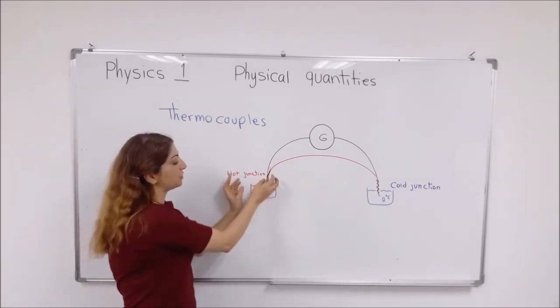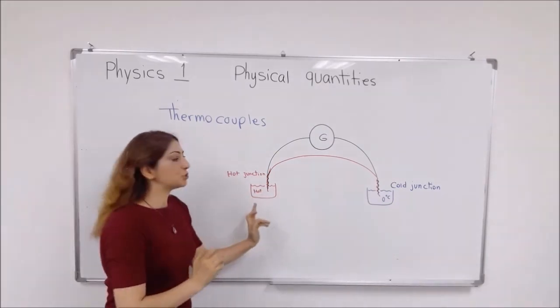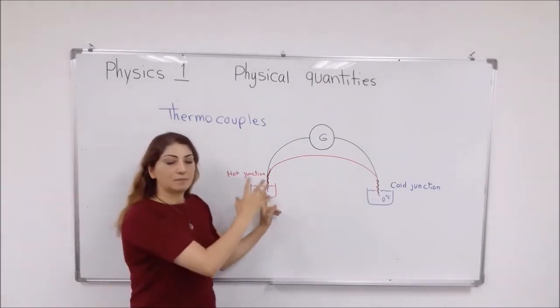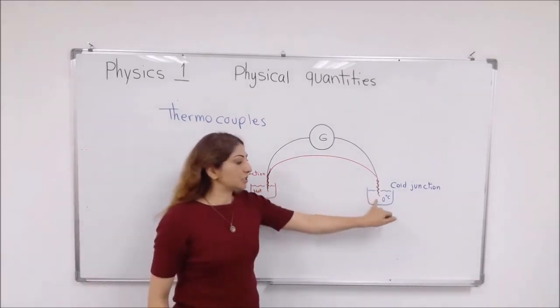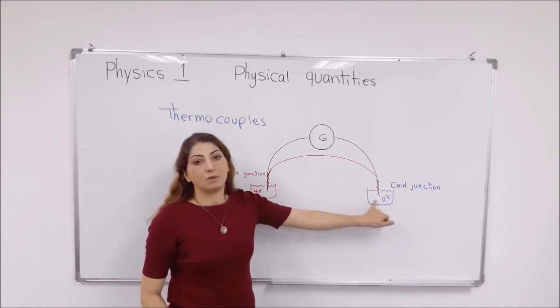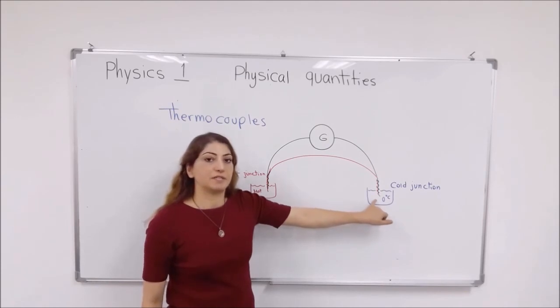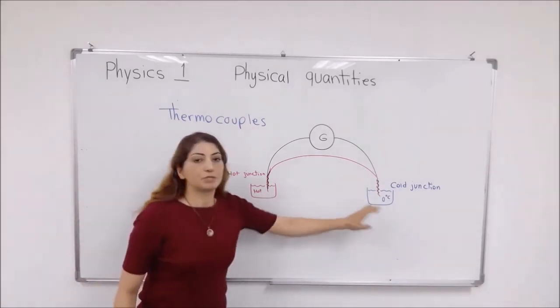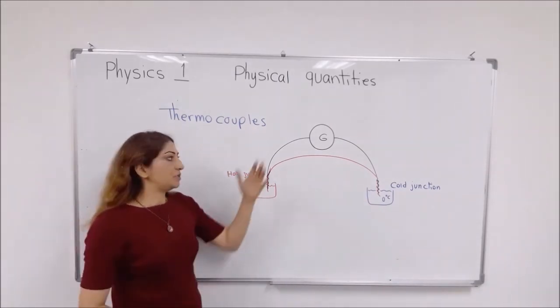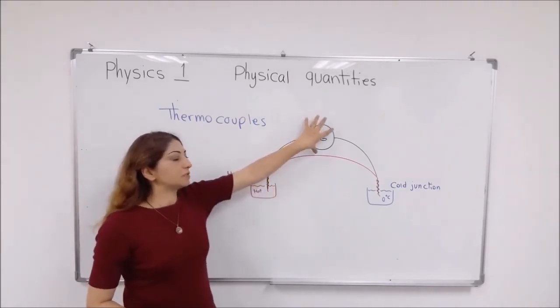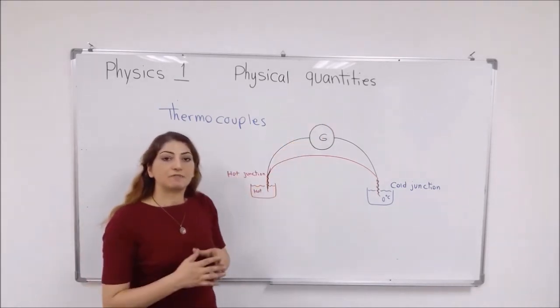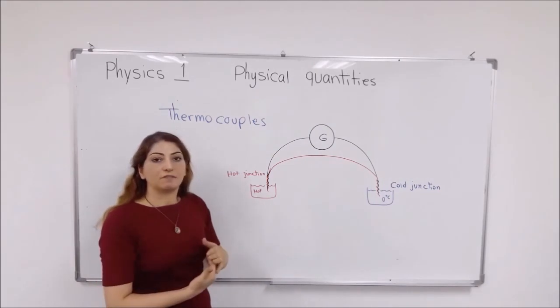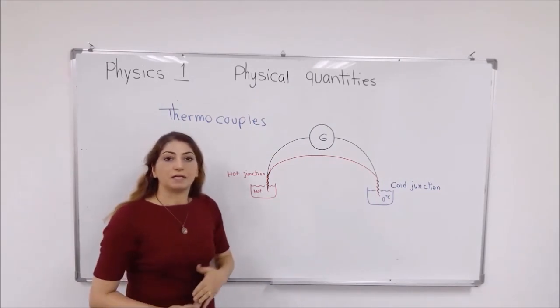They are joined together at two points here. And one junction is placed in a liquid or in a place that you want to measure its temperature, and the other junction is placed in a cold, very cold place like ice, which is zero centigrade degrees. So the difference between these two temperatures will be translated back into voltage on the voltmeter or galvanometer. Then you can find the temperature by bringing this value on the calibration curve.